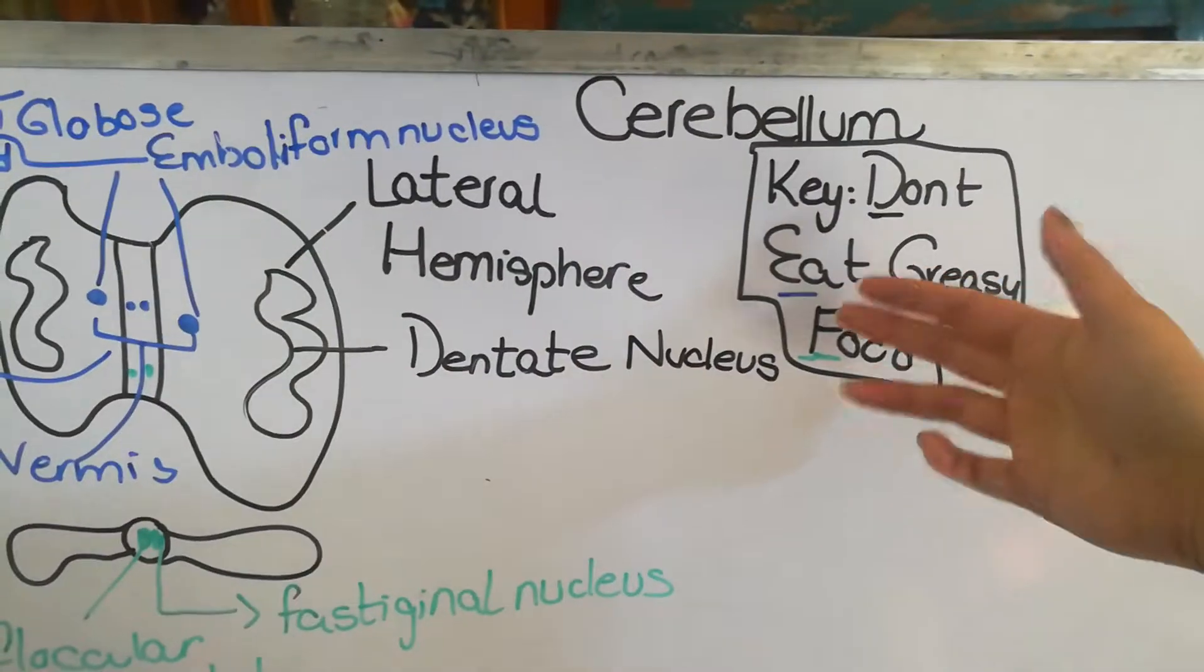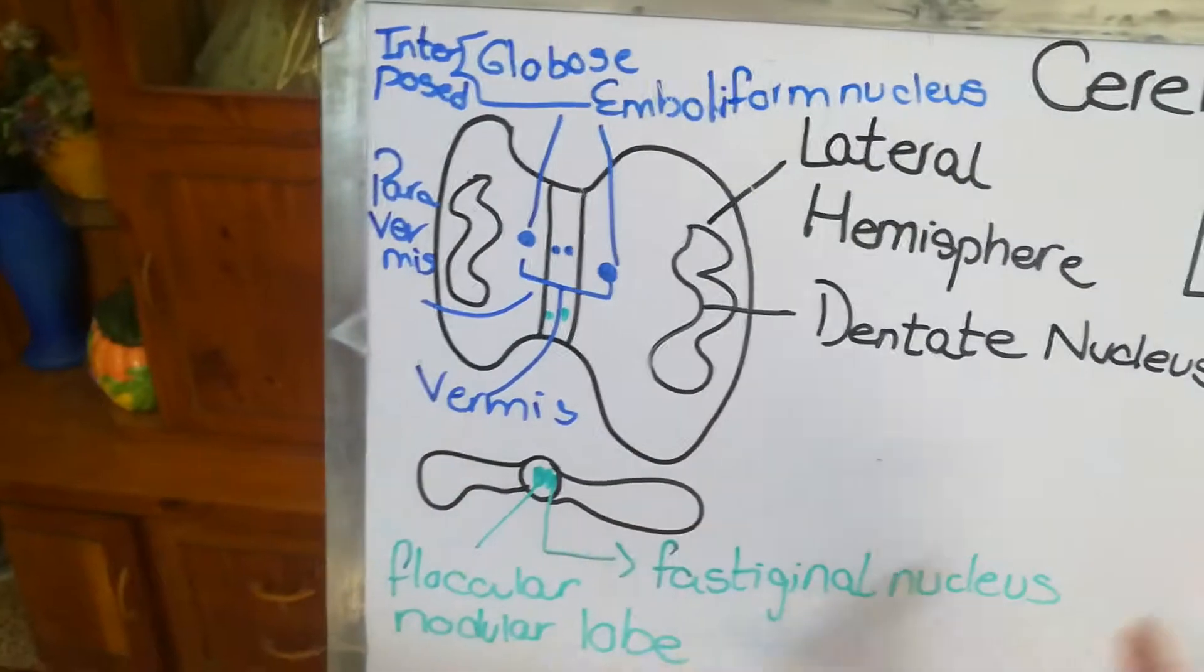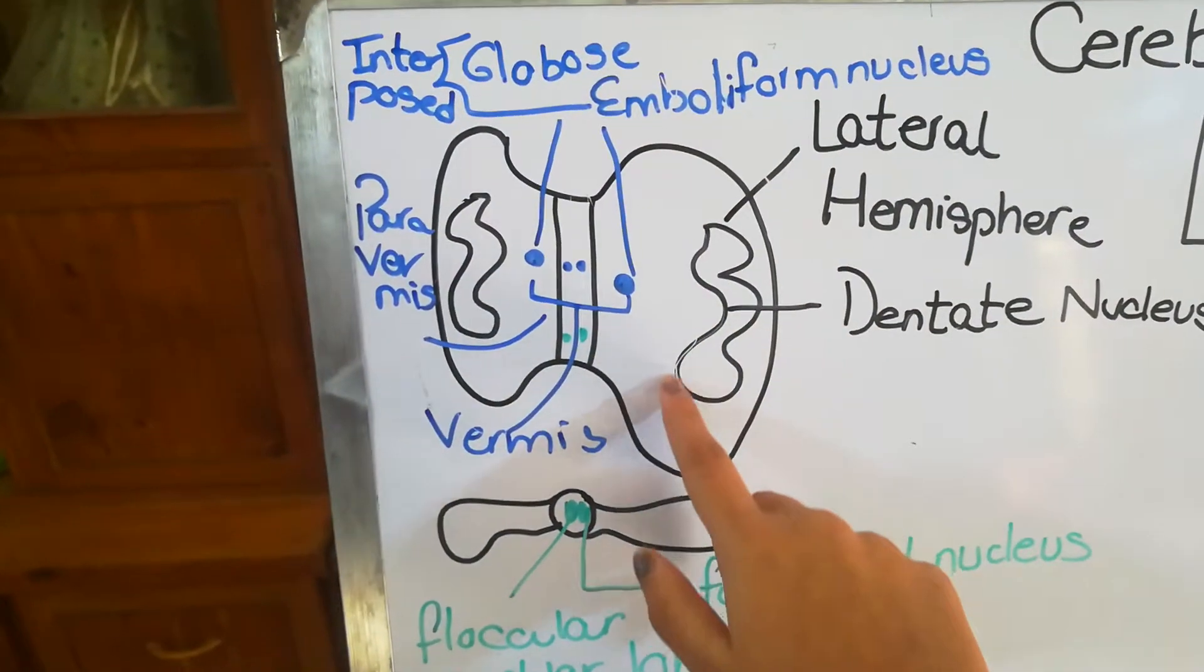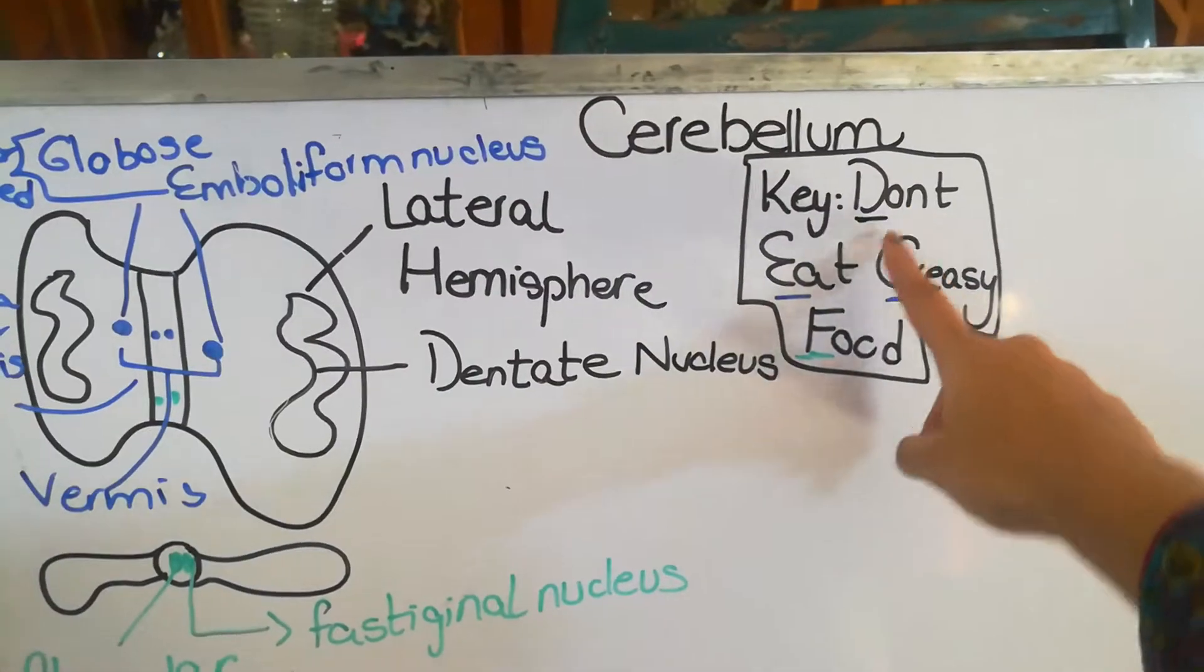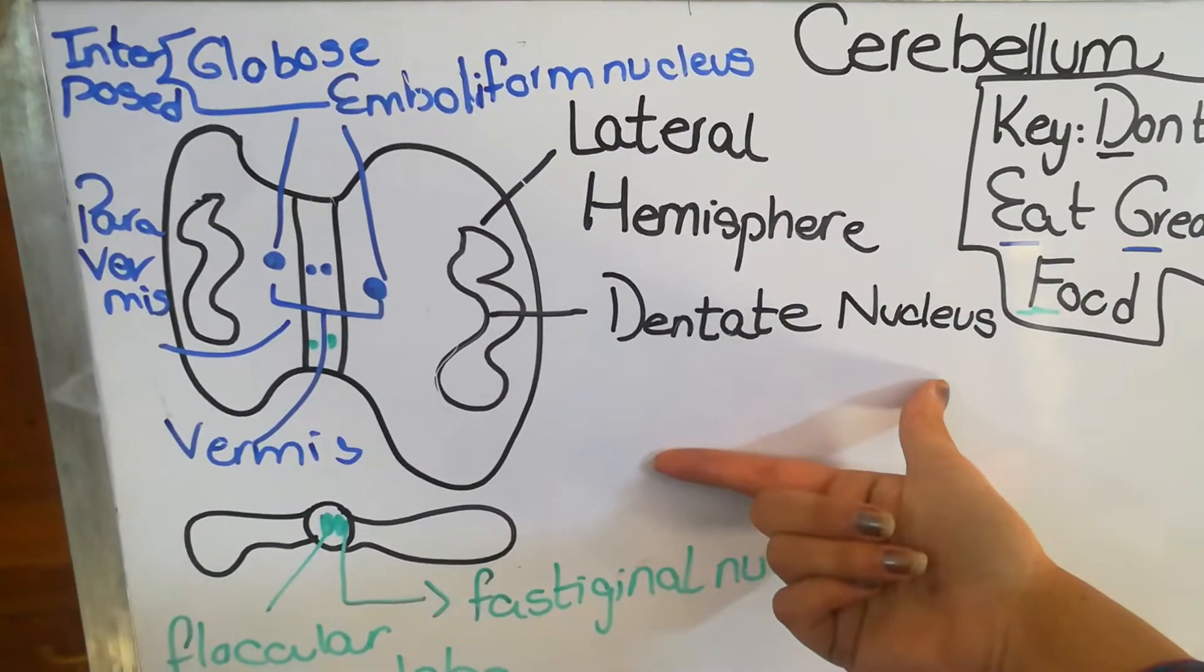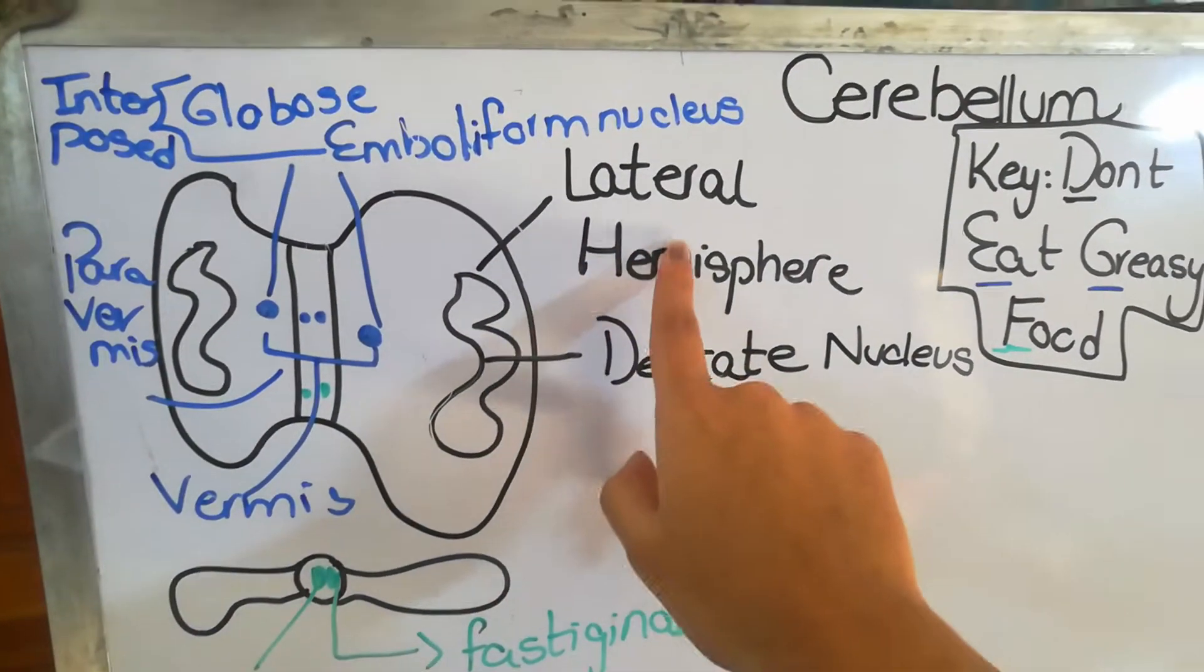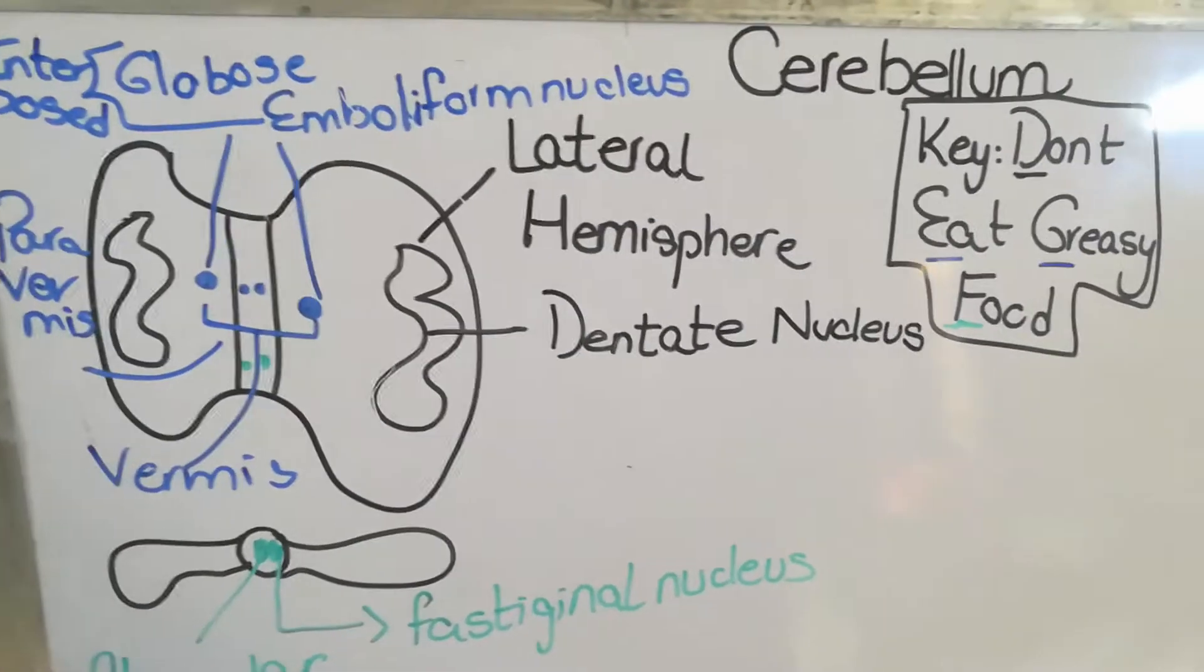Keeping this mnemonic in mind, let's see where these nuclei are located in the cerebellum. Number one has a curved shape. This is the dentate nucleus because from our keyword, 'don't eat greasy food,' D comes first. The dentate nucleus is located at the lateral end of the cerebellum in the lateral or cerebellar hemisphere.